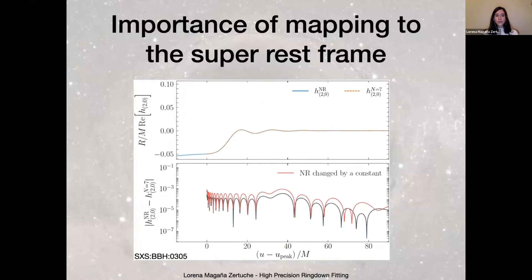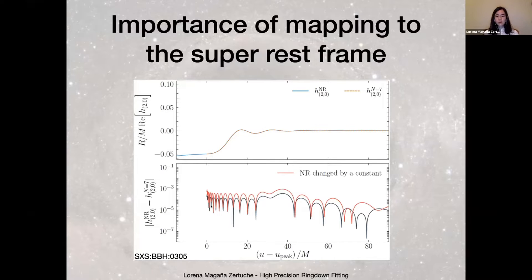If instead we translate this to the super rest frame, the numerical relativity waveform mode now goes to zero, and when we try to model it, our model has a much easier time. The residual starts going orders of magnitude lower — a much better improvement. If you just do a constant shift, you get the red line, which is still pretty good, but it's not the right thing to do.